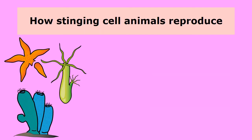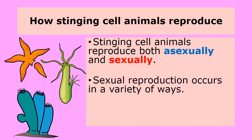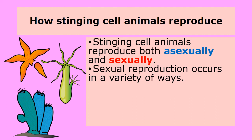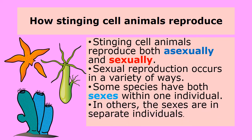Stinging cell animals reproduce both asexually and sexually. Sexual reproduction occurs in a variety of ways. Some species have both sexes within one individual. In others, the sexes are in separate individuals.